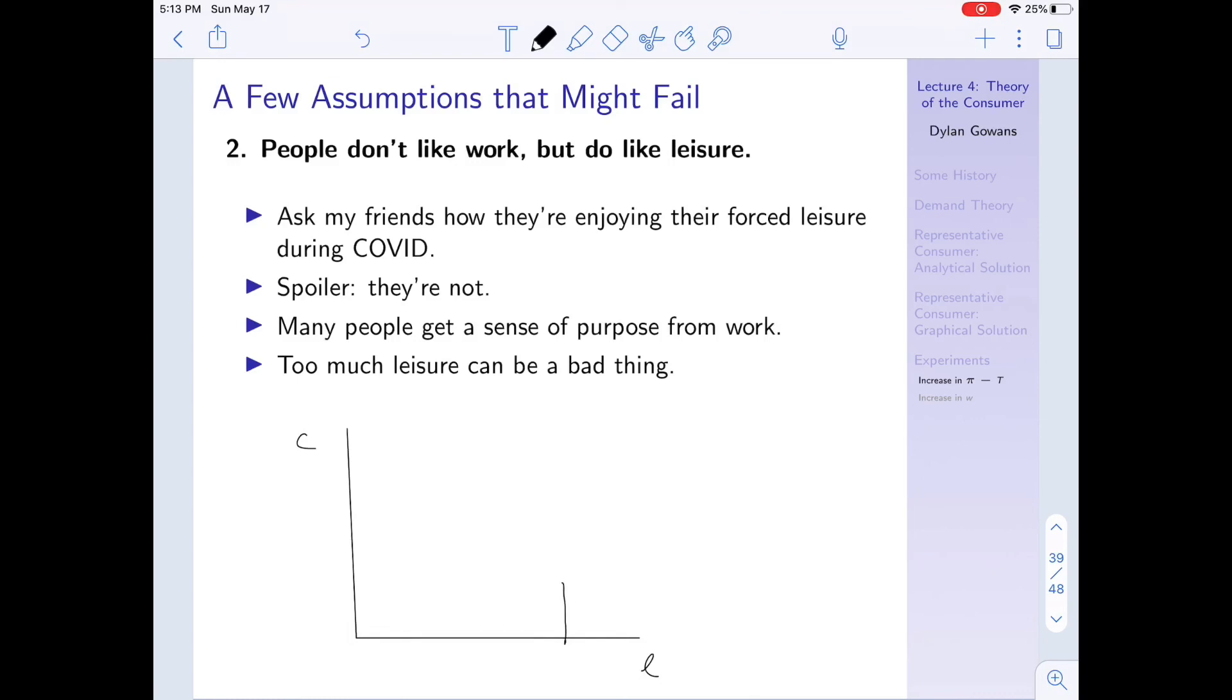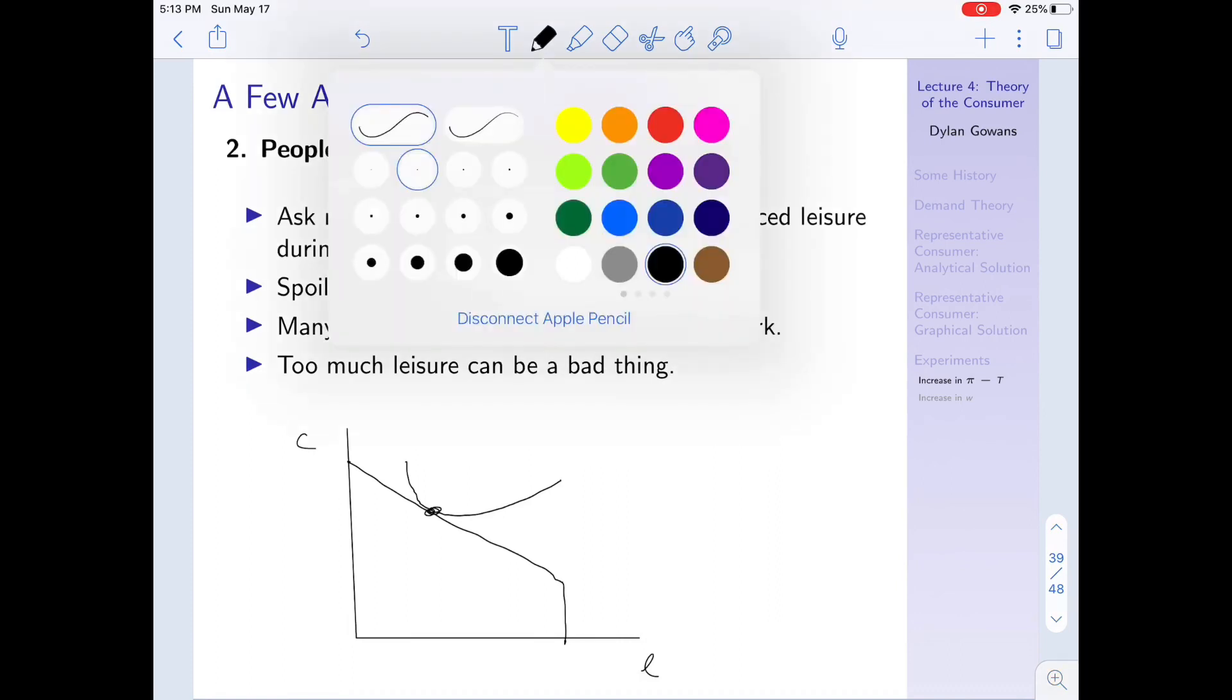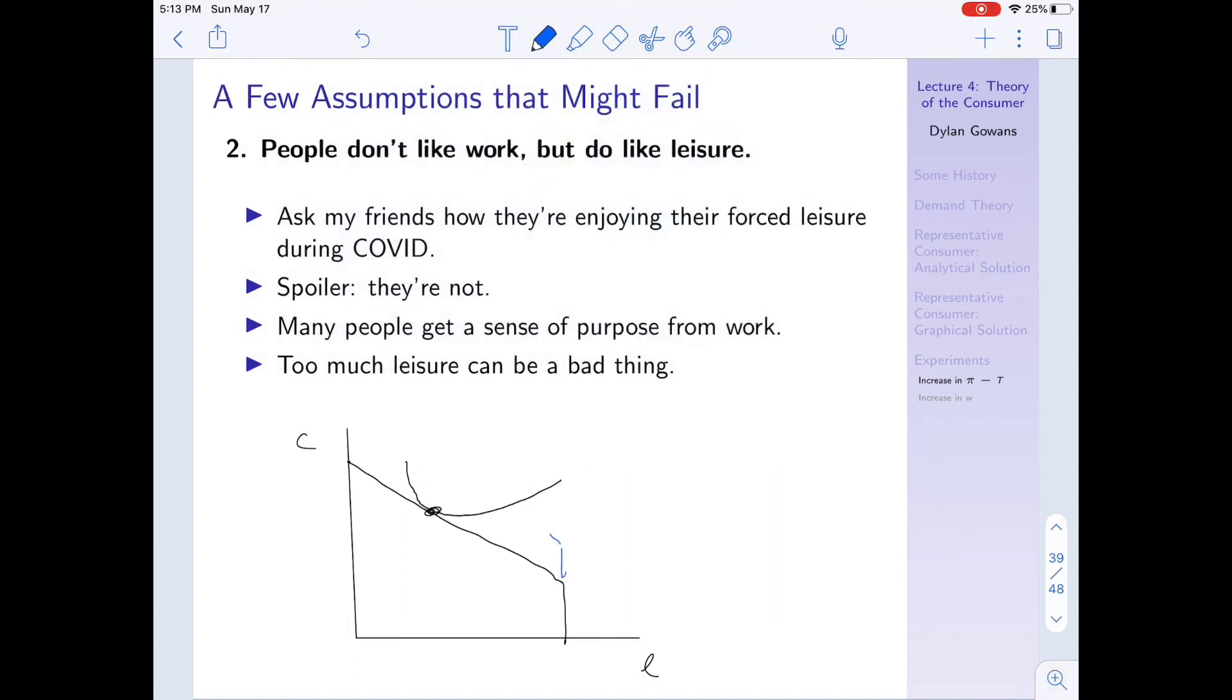And so how does that change the model? Well, again, imagine we have our budget line like this, and imagine we're initially at a point like that. And then we have an increase in our budget line like that. Well then, depending kind of on what point of the indifference curve I'm at, I might not increase my leisure at all, right? In fact, I might decrease it or stay exactly the same, and it kind of depends on exactly the shape of the indifference curve and its slope.